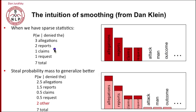So suppose in our training data we saw denied the allegations, denied the reports, denied the claim, denied the request. And so we've computed probabilities. There were seven total things following denied the, and we can get our probabilities of everything, of each of these things.